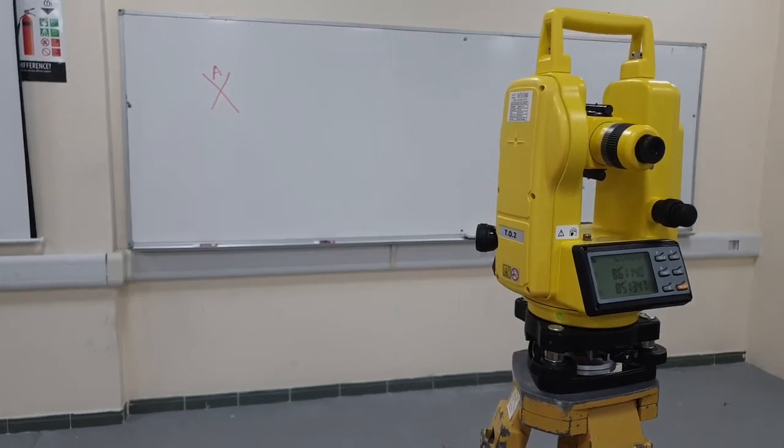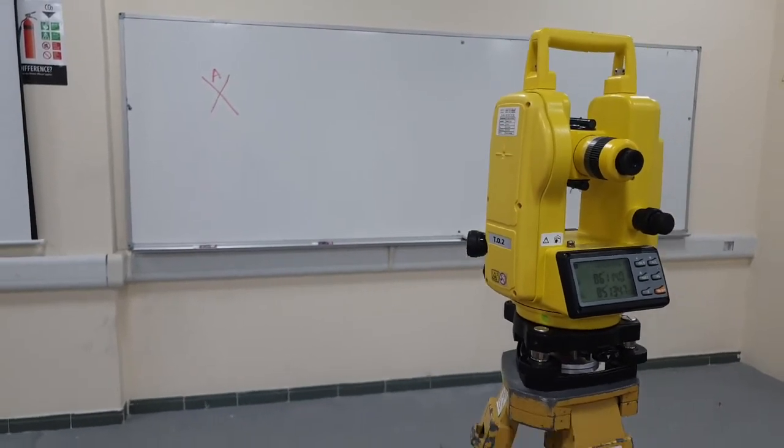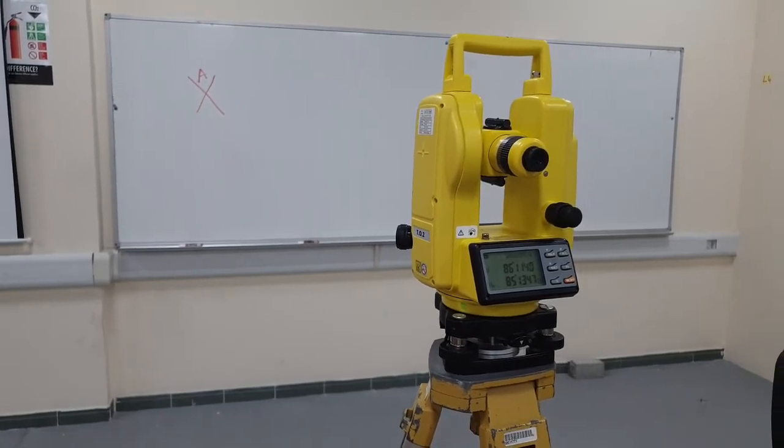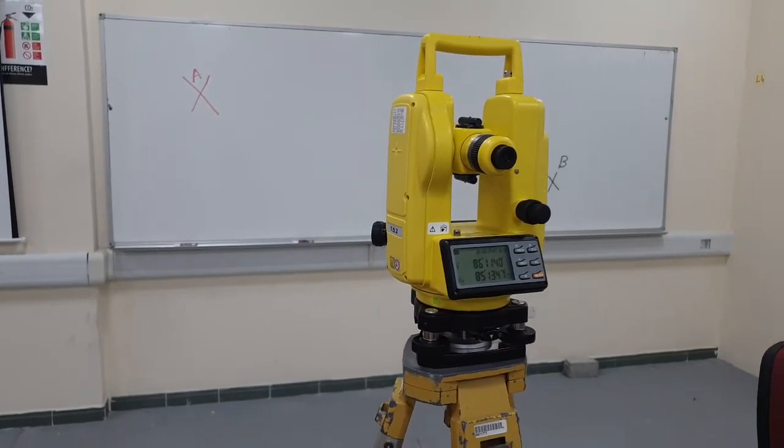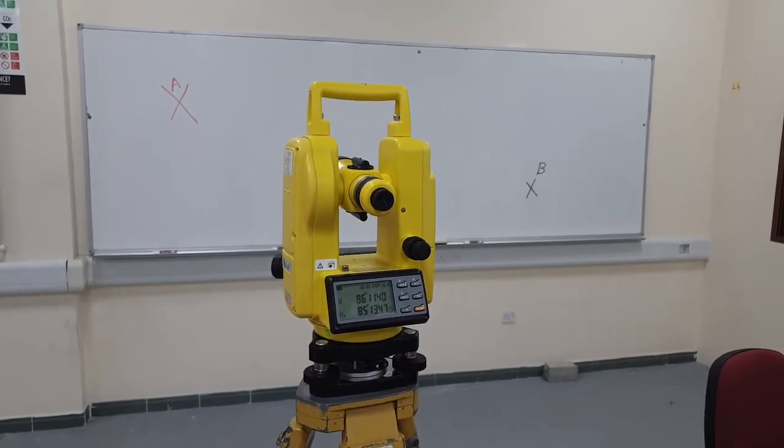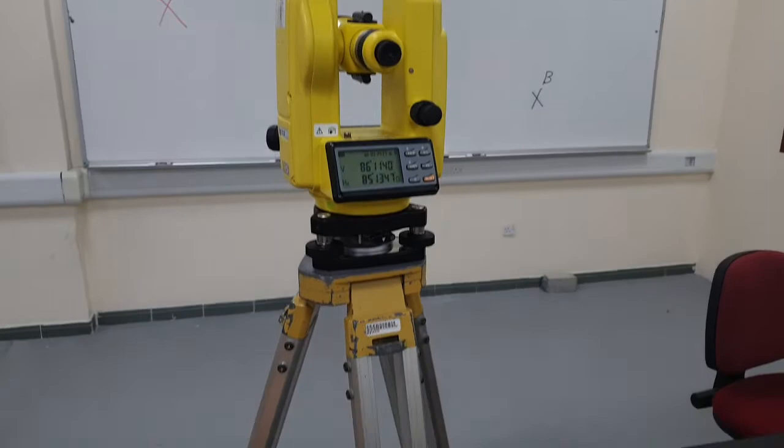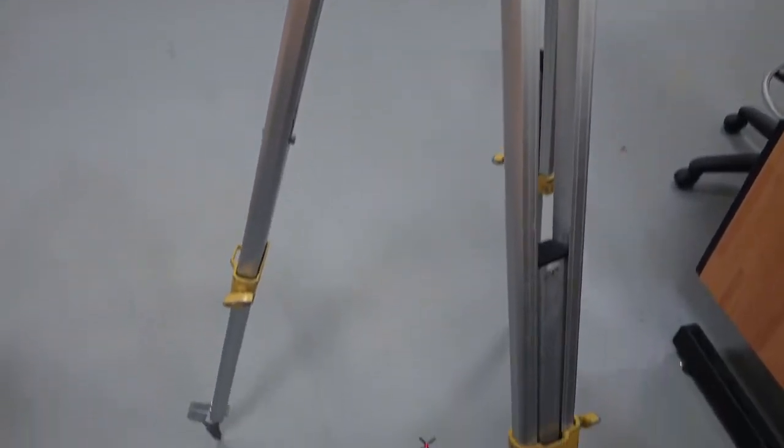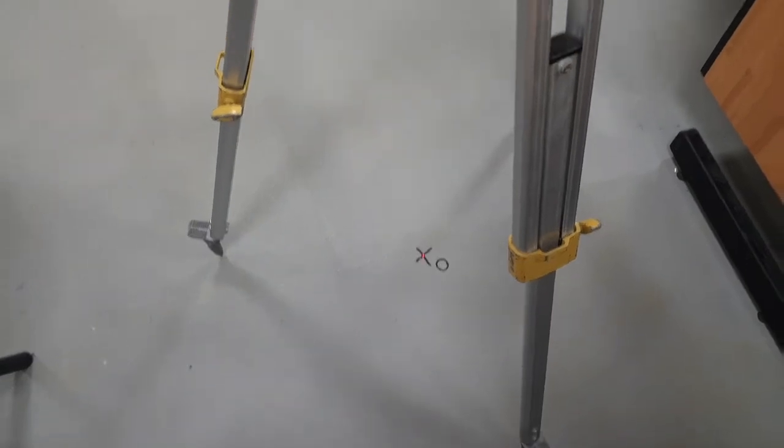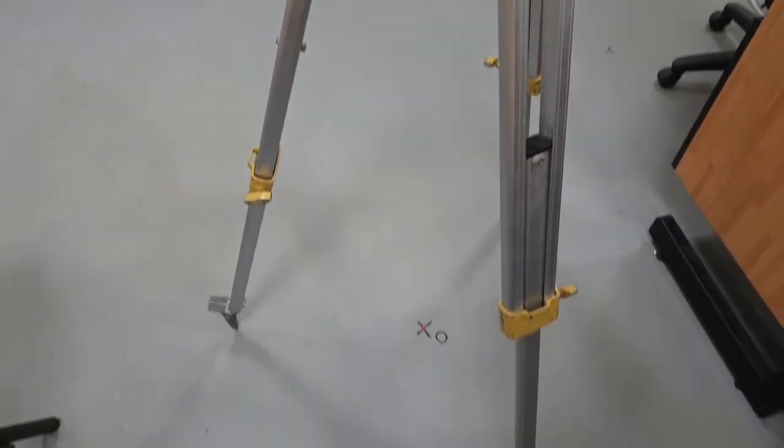In this video we will demonstrate how to take a simple measurement in the digital theodolite. You will see here I already placed two points on the board, A and B, and I already centered the station on a point on the ground called O.